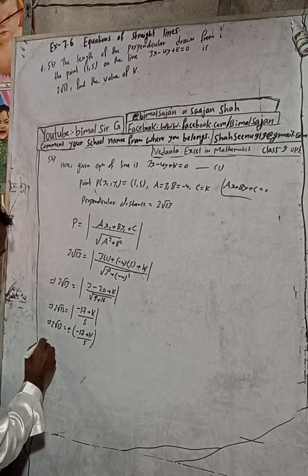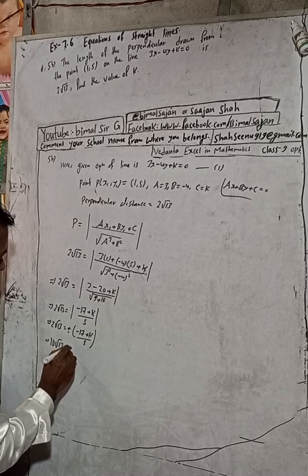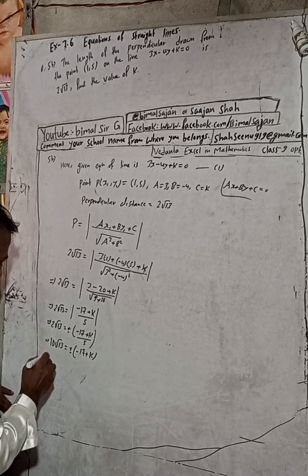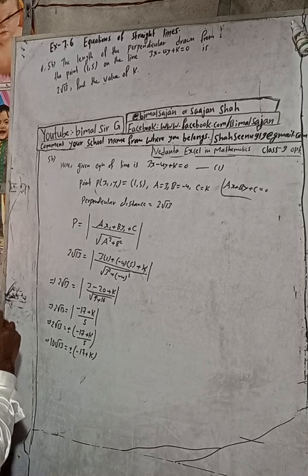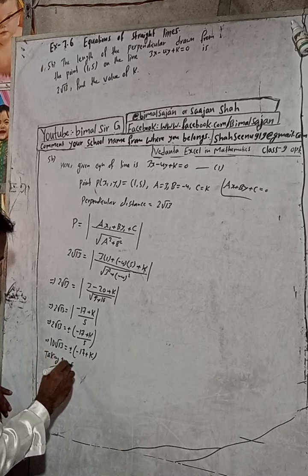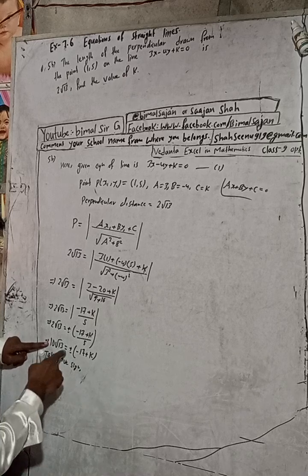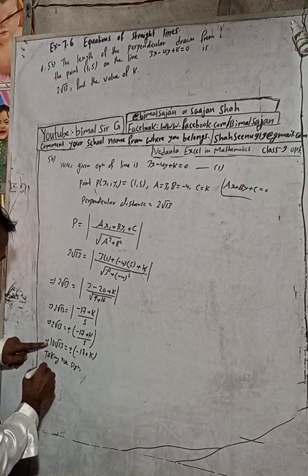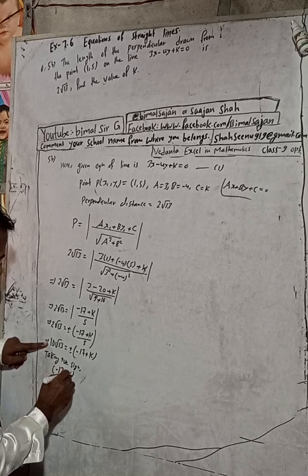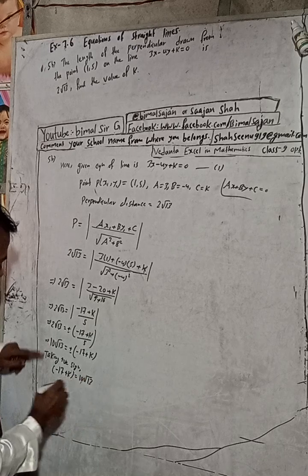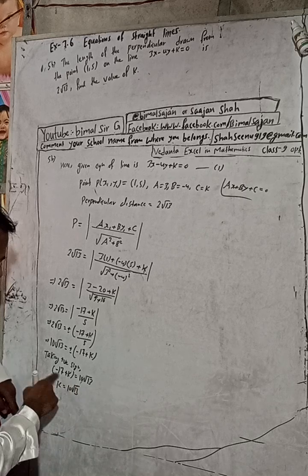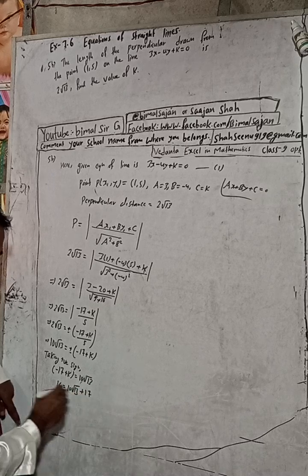Taking the positive sign: minus 17 plus k equals 10√13. Therefore k equals 10√13 plus 17, so one value of k is 17 plus 10√13.